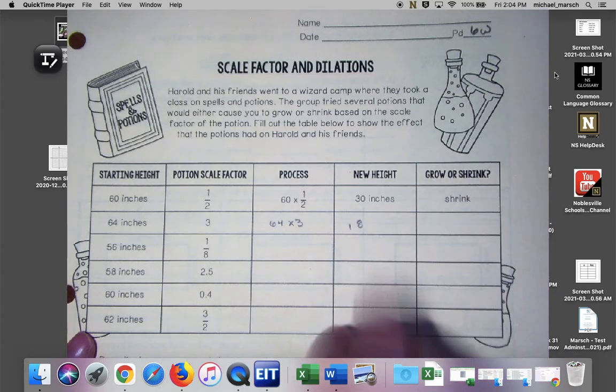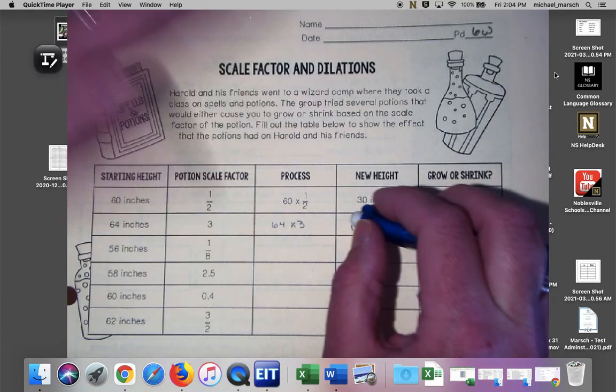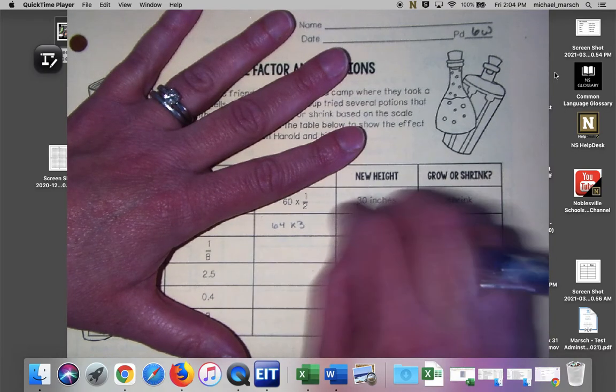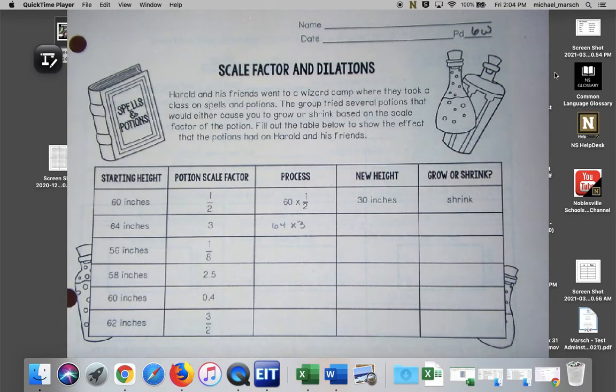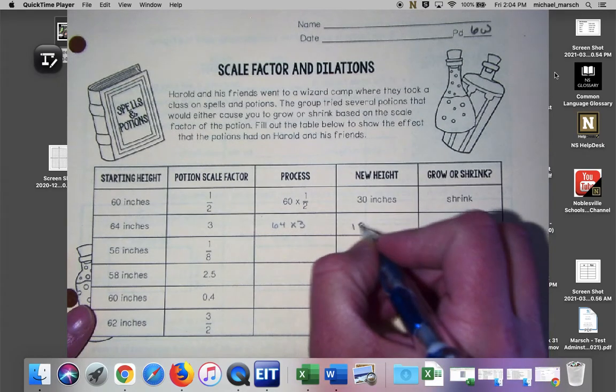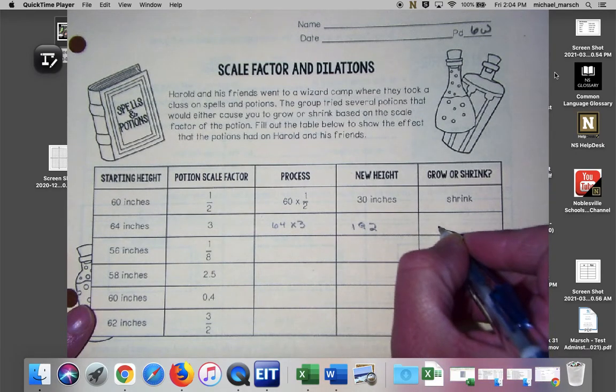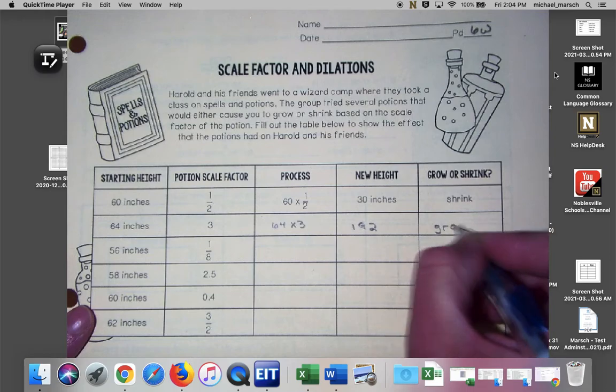192. Is it 192? 64 times three, yeah 192. And clearly that person grew in size, right?